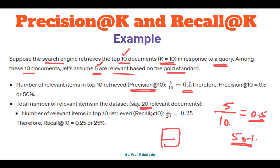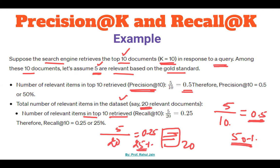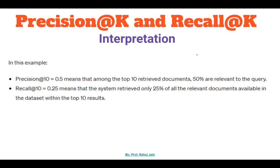Now, the total number of relevant items in the dataset is 20. Recall equals number of relevant items in top 10 — which is 5 — divided by total number of relevant items in the dataset — which is 20. So Recall@10 is 0.25, that is 25 percent. The interpretation: Precision@10 is 0.5, meaning that among the top 10 retrieved documents from the information retrieval system, 50 percent are relevant to our query.